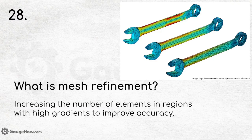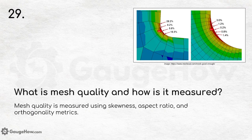What is mesh quality and how is it measured? Mesh quality is measured using skewness, aspect ratio, and orthogonality metrics. At the graduation level, skewness and aspect ratio are most commonly evaluated during practical sessions.